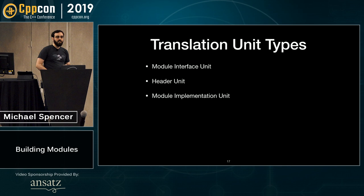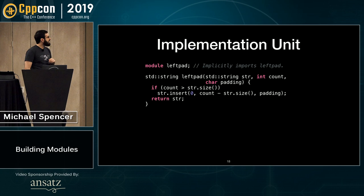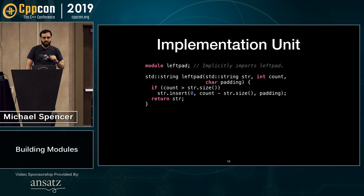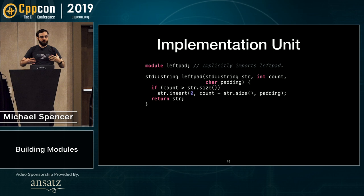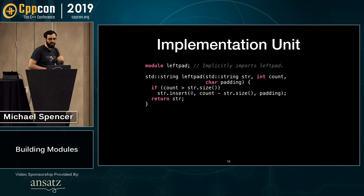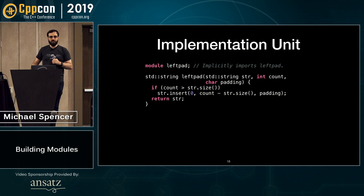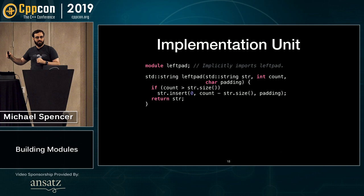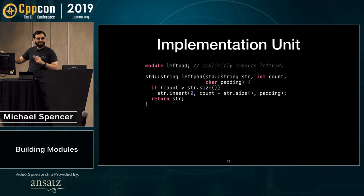Additionally, we have module implementation units. They don't have 'export', but they do name the module and are part of it. They implicitly import their interface — much like when you have well-componentized C++ code today with a header and an implementation file, where the implementation file always includes the header first. We just do that implicitly here. You can define things from that module but can't put export here — this is an implementation, not an interface. This defines left pad, and no other module can define this left pad, because this is left pad's left pad.